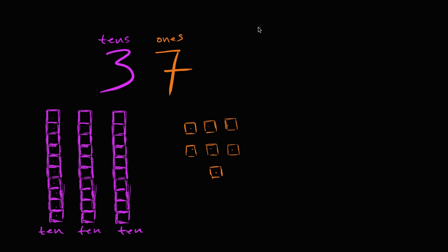So you can say that 37 is equal to 3 tens, we do this in the purple color, it's equal to 3 tens, plus 7 ones, plus 7 ones.